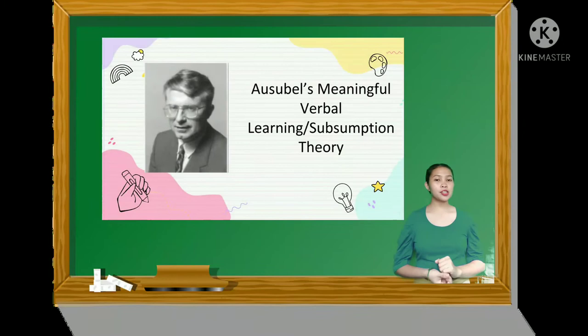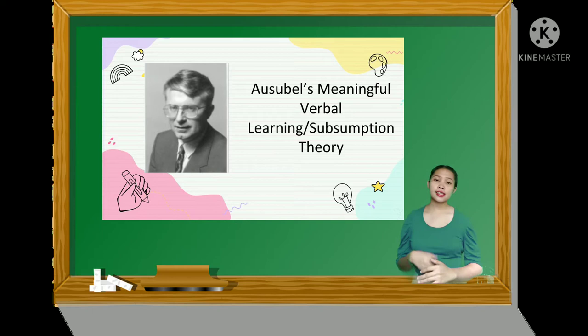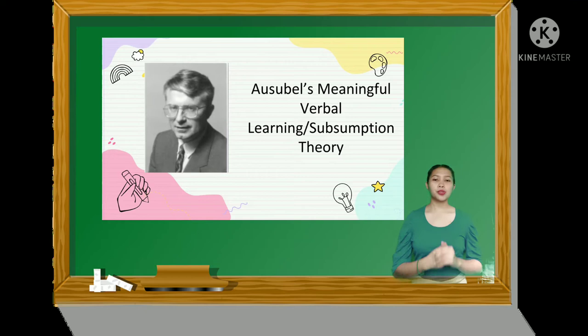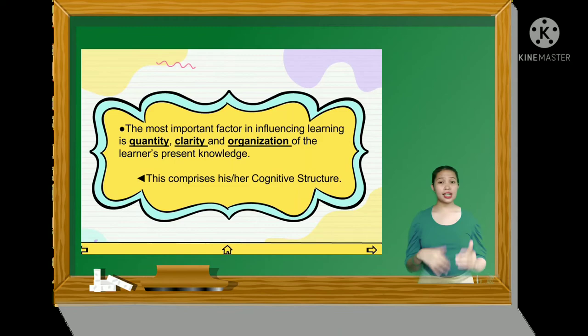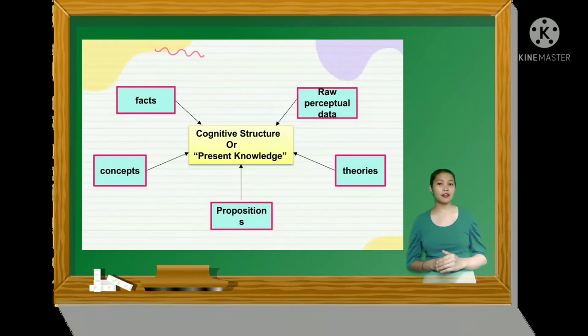The purpose of this theory is to help introduce a new lesson, unit, or course. It summarizes major ideas in a new lesson or unit based on the student's prior knowledge. It shows similarities between old material and new material, and allows students to transfer or apply knowledge. The most important factor in influencing learning is the quantity, clarity, and organization of the learner's present knowledge.